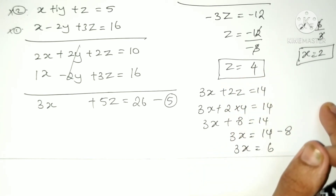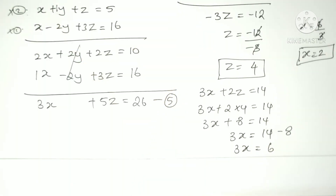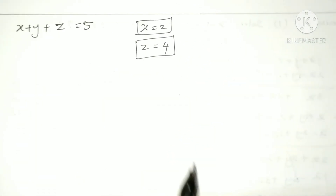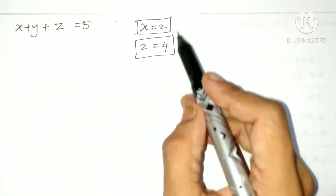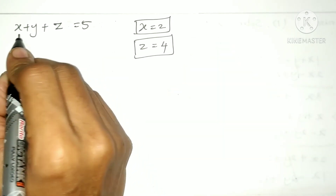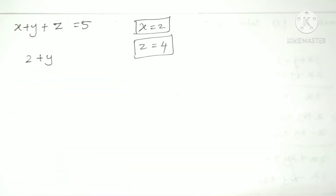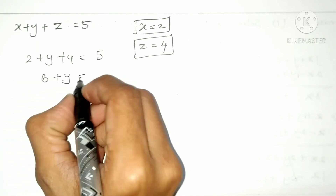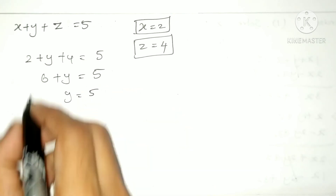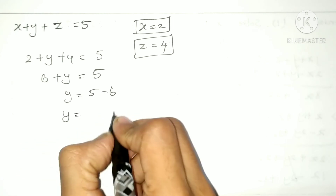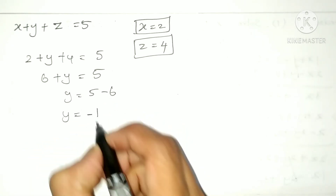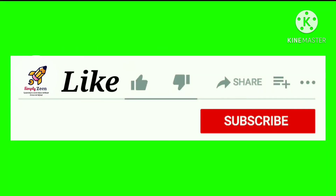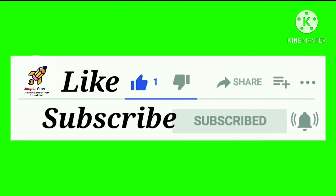Now we substitute x equals 2 and z equals 4 into equation 1: x plus y plus z equals 5. So 2 plus y plus 4 equals 5. That gives 6 plus y equals 5, so y equals 5 minus 6, which is y equals minus 1. These are our three values.